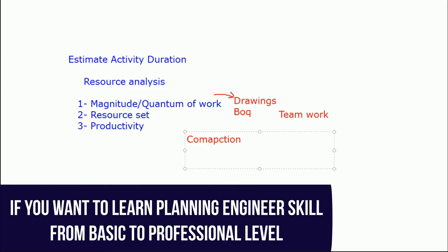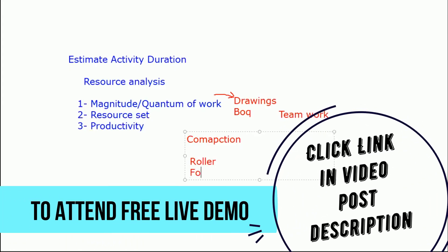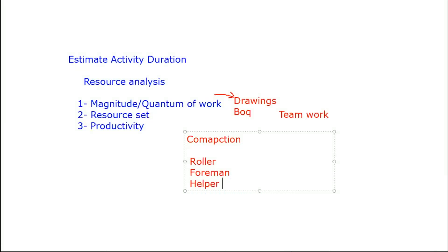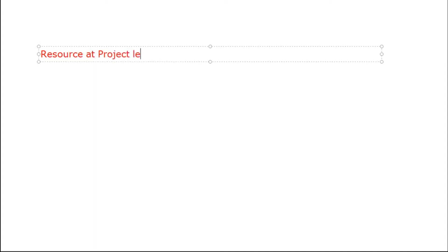For a compaction activity, you need to know what resources are required. For compaction you need: your roller (machinery), your foreman (manpower), and your helper (manpower). So three resources work together for this activity.